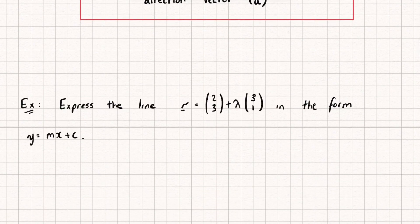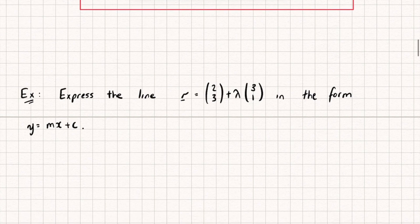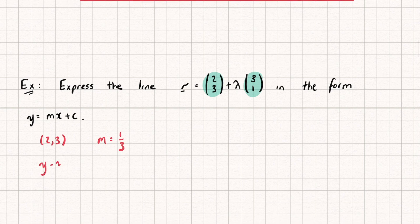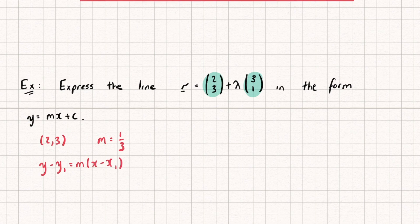Now let's go in reverse. Here we've been given a vector equation of a line and we want to get it in the form y = mx + c — Cartesian form. Using what we've done previously: the position vector part gives us a point on the line with coordinates (2, 3). And the direction vector with entries (3, 1) — taking the reciprocal — gives us the gradient of our line, which is one third. We can then use y − y₁ = m(x − x₁) to find the Cartesian form.